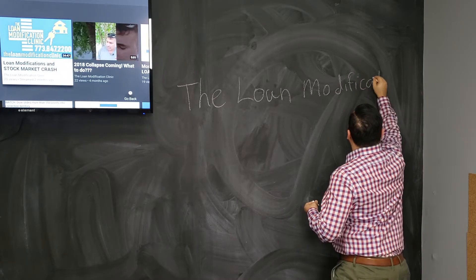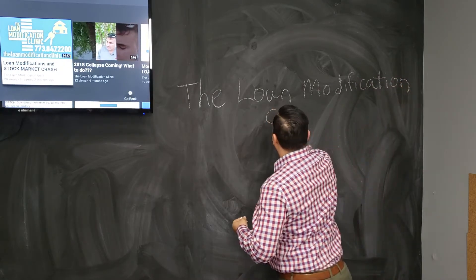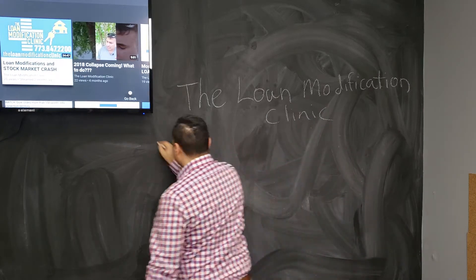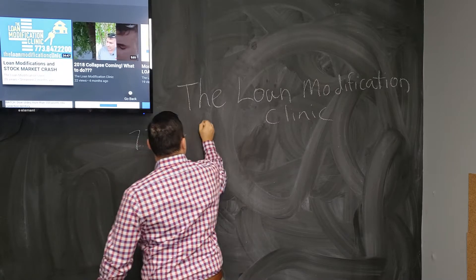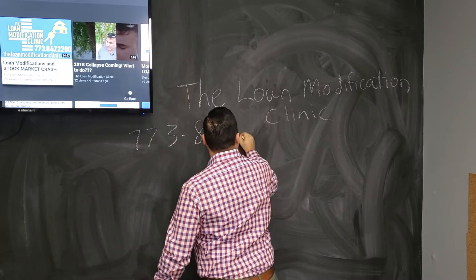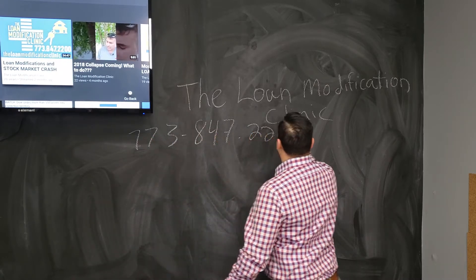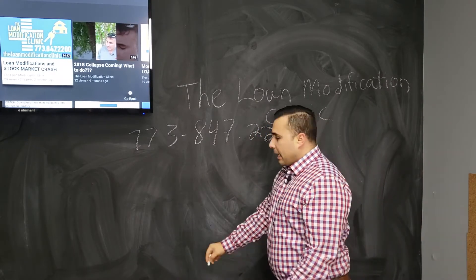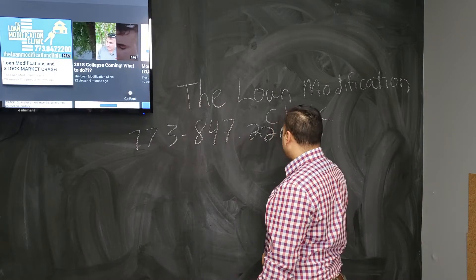The Loan Modification Clinic, and the number to call is 773-847-2200. It's very easy to call and set up your appointment.